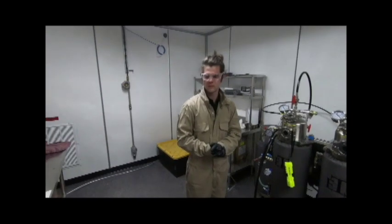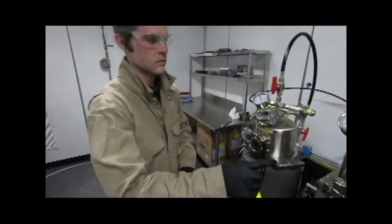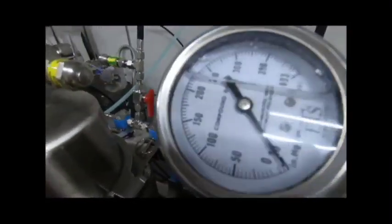Number six, you want to allow the vacuum to pull as close to negative 30 PSI as possible, watching pressure gauges to monitor the progress.